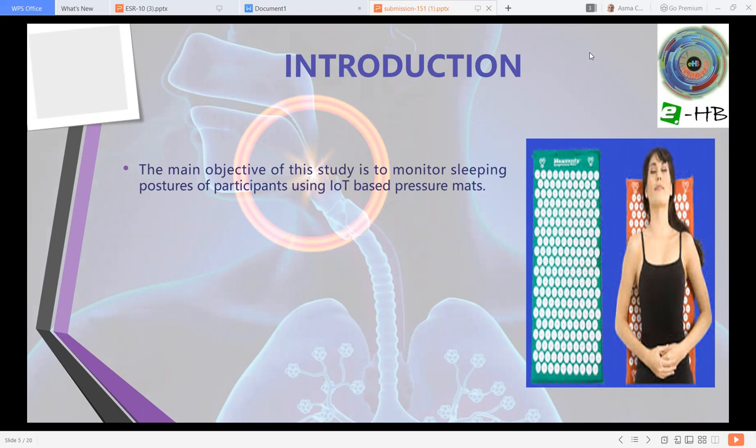The dimension of the matrix is 32 by 64 inches. Each sensor is one inch apart from the other and all the sensors are equally distributed. The prime goal is to avoid the supine sleep position using objective measurements.